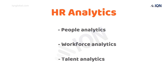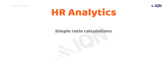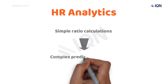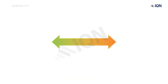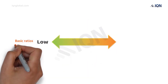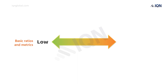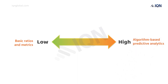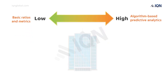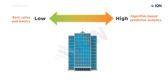HR analytics can start from simple ratio calculations to complex predictive analytics — it is like a continuum. On one end, there are basic ratios and metrics, and on the other end, there are complex algorithm-based predictive analytics. An organization can fall anywhere on the spectrum.